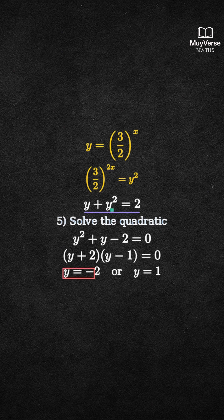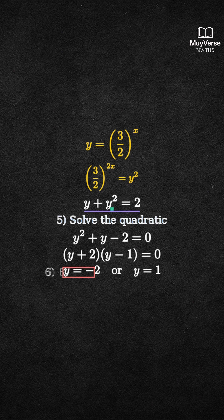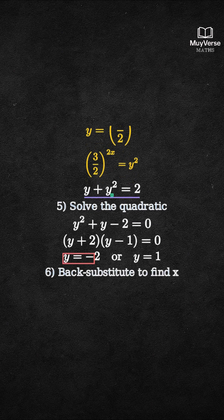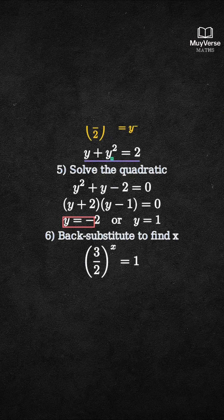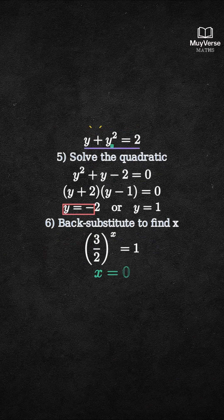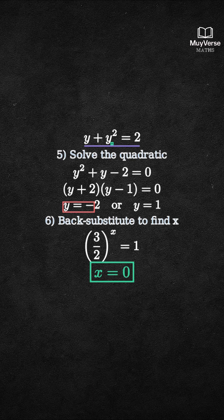Because y is 3 over 2 to the x, it must be positive. So discard negative 2. Step 6. Back substitute. 3 over 2 to the x equals 1. The only power that makes a positive base equal 1 is 0. So x equals 0.